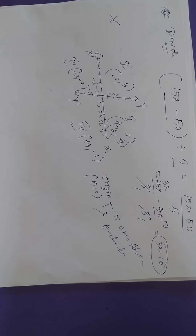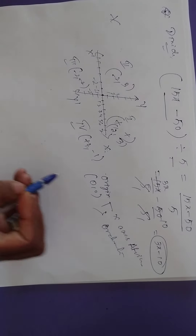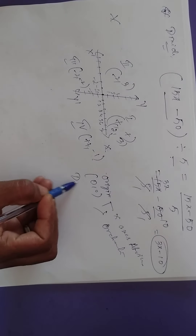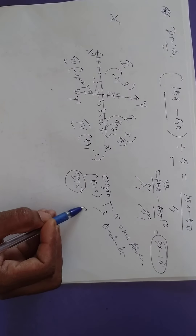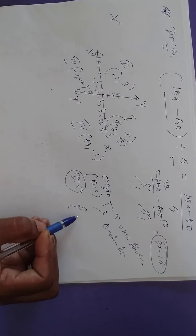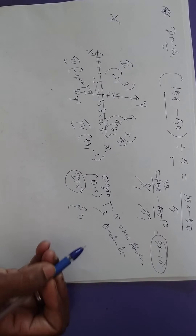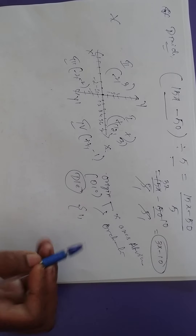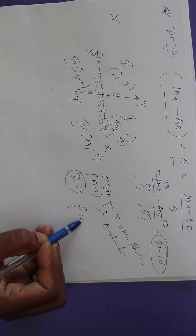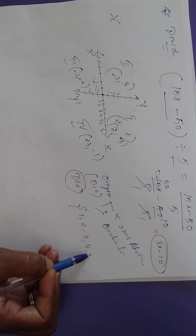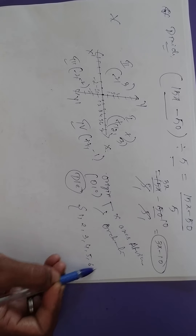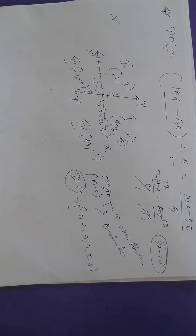When you throw one die, what are the possibilities? The die has six faces: one, two, three, four, five, or six — these are the six possibilities when you throw one die.